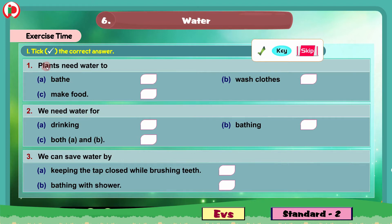Question 1: Plants need water to dash. The given options are A. Bath, B. Wash clothes, C. Make food. The correct answer is C, make food. We will put the tick mark here for option C. Plants need water to make food.